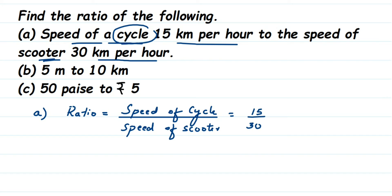When we write down a ratio, it should be in reduced or simplest form. So cancel the numbers: 15 by 30 — 15 ones are 15 and 15 twos are 30, so we get 1 by 2. This fraction can be written in ratio form as 1 is to 2.